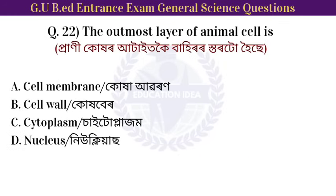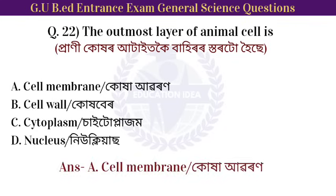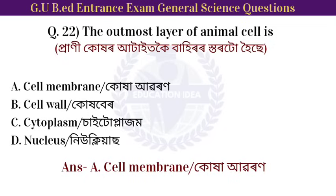Next question: the outermost layer of an animal cell is. Option: cell membrane. The outermost layer of an animal cell is the cell membrane.